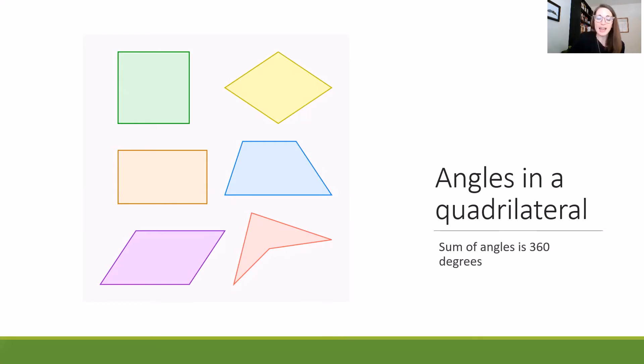In every one of these, for example, in the square and the rectangle, you can see that the corners are all 90 degree angles. So if you add 90 plus 90 plus 90 plus 90, you'll get 360. But even if the shape is shifted to another angle, the sum is always going to be 360 degrees.